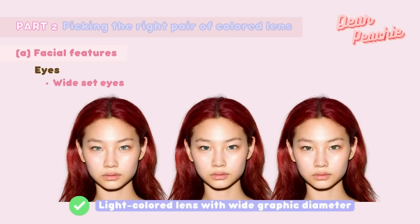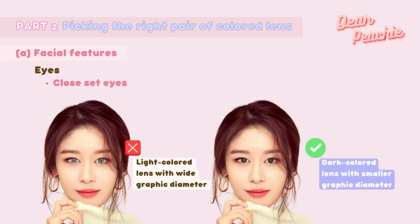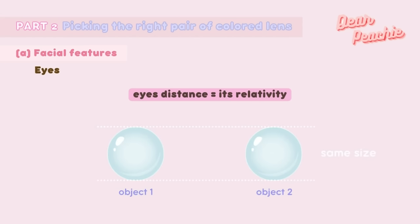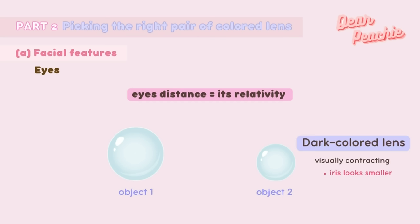So if you have wide-set eyes, choose light colored lenses with a wider graphic diameter. For close-set eyes, choose dark colored lenses with a smaller graphic diameter. This works through the principle of relativity — if you make one object smaller, the other appears bigger by contrast. Wearing dark colored lenses contracts the visual size of your iris, so your eye distance appears wider relatively.